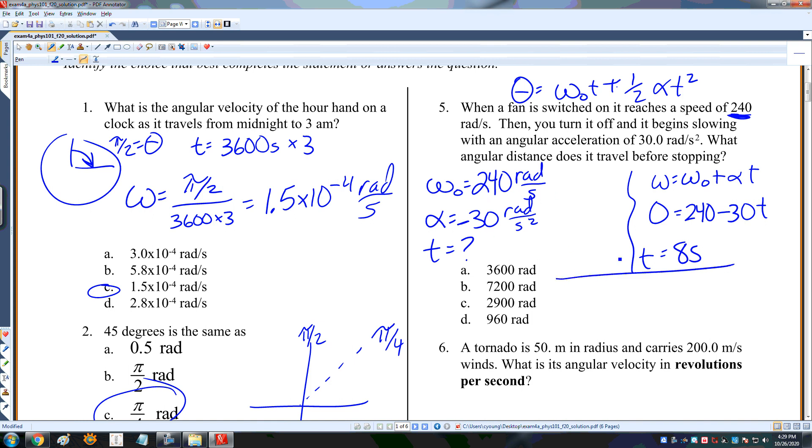Now I can find my theta. Omega nought is 240 times 8 plus 1 half, a negative 30 times 8 squared. And if I do that, I get 960 radians.